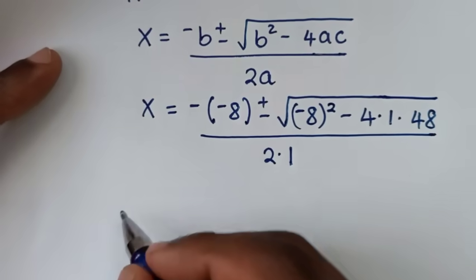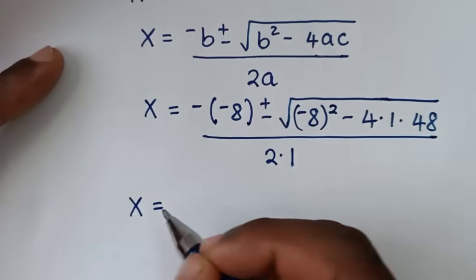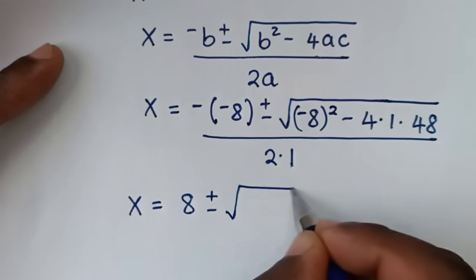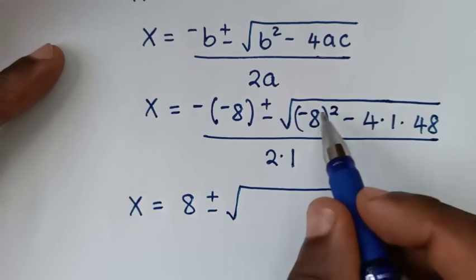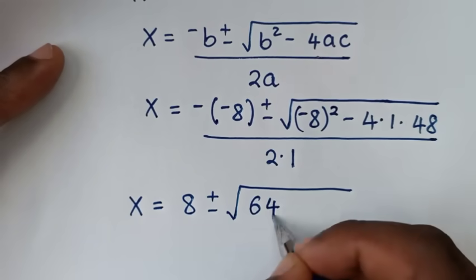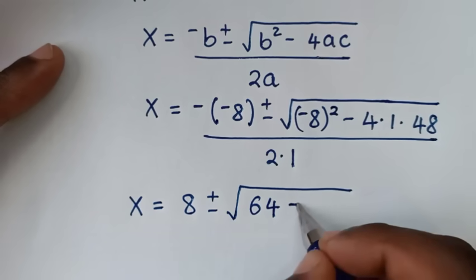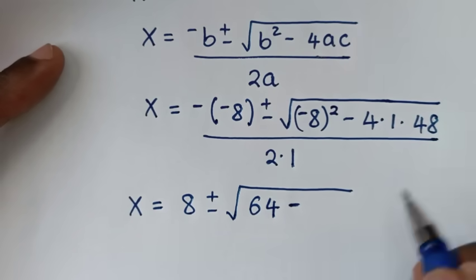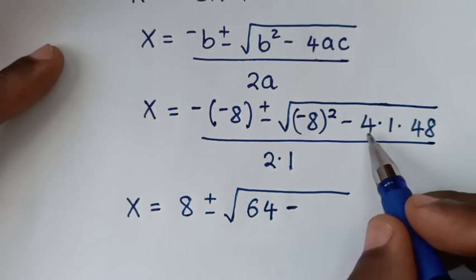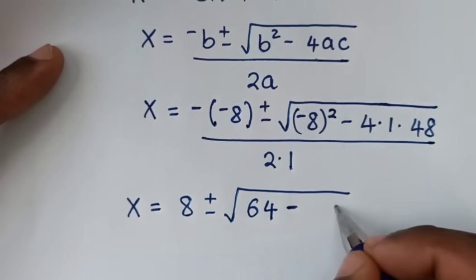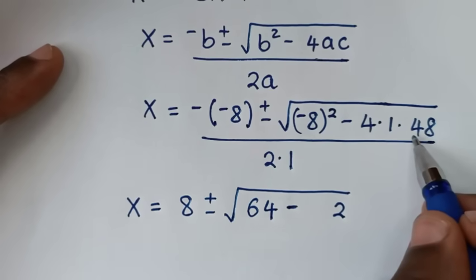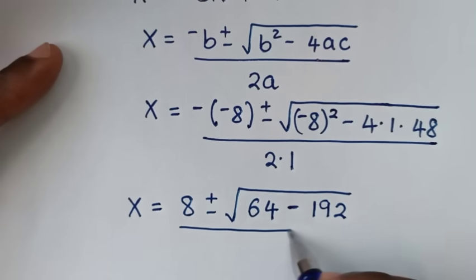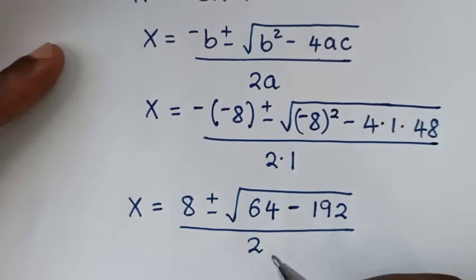Then in the next step, it will be x is equal to — negative and negative 8 is positive 8 — plus or minus square root of negative 8 squared, it is 64. Then negative, because negative times positive, negative times 48 is negative. Then 4 times 8 is 32. 4 times 4 is 16. 16 plus 3 is 19. Then over 2.